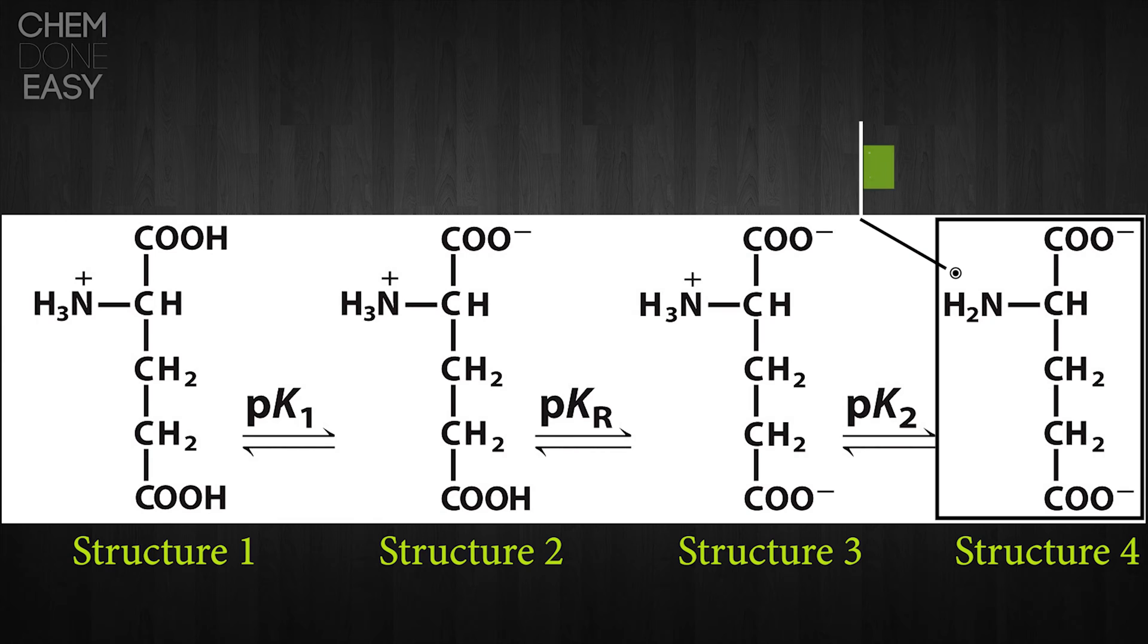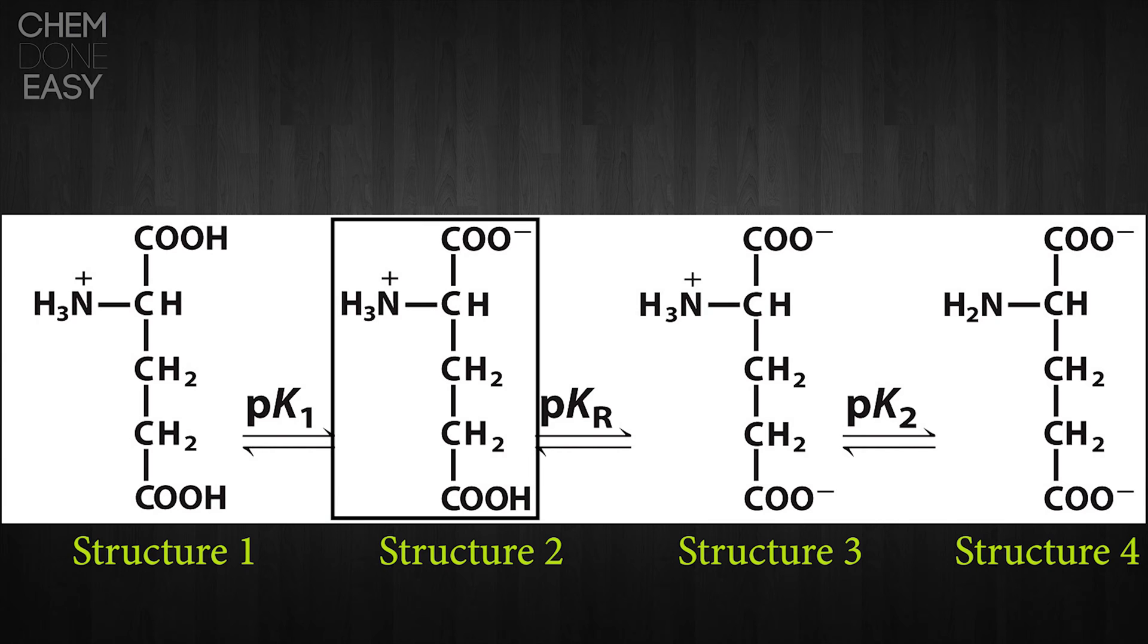And finally, the amine group has been deprotonated, meaning that we now have an overall charge of minus two. To determine the isoelectric point of glutamic acid, we need to determine at what pH will structure two be dominant.